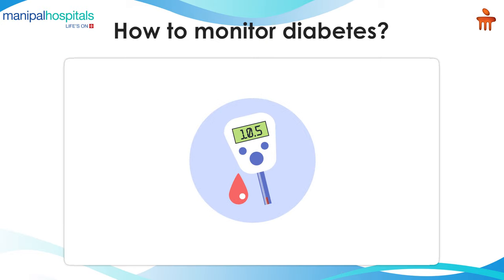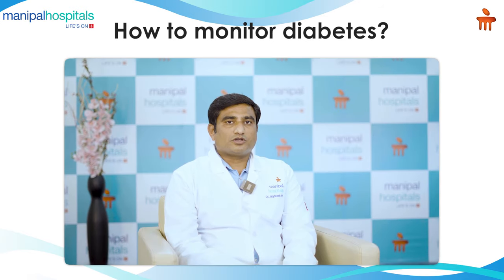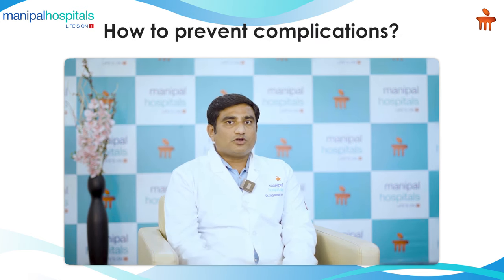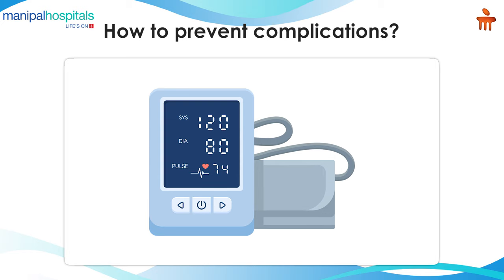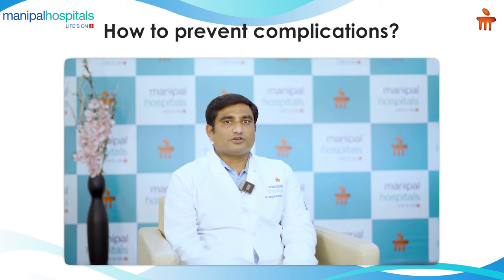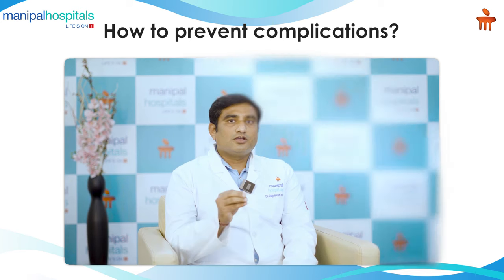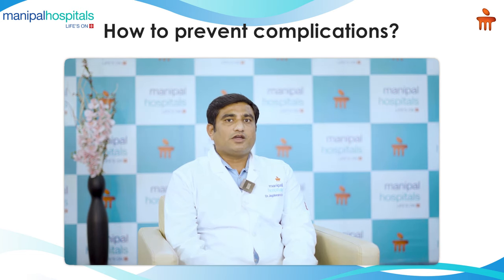How to monitor? Blood glucose monitoring can be done intensively for patients who are on insulin or those who want tight control — monitoring pre-meals and post-meals regularly. To prevent complications, we have to check BP regularly; if BP is more than 140/90, we need to start medication. We also check cholesterol regularly; if cholesterol is high, we start statins. Smoking needs to be reduced.